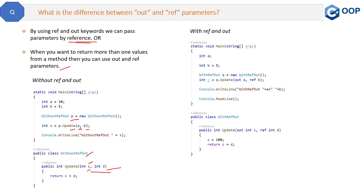Now let's see what happens with ref and out. Here we are using a class with ref and out parameters. When the object is created and we pass an out parameter and a ref parameter, the address of variable a and the address of variable c remain the same because they are out parameters. Similarly, the address of variable b and variable d will be the same because they are ref parameters. This is what we mean by passing parameters by reference — they maintain the relation.